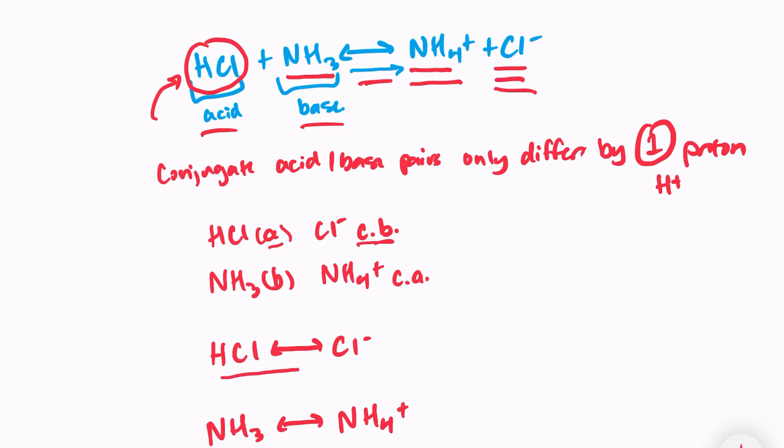So if we're only looking at the forward reaction, HCl loses a hydrogen, correct? That's why I call this the acid. HCl is the acid. It's giving away, it's donating a hydrogen. But if I look at the reverse reaction, going backwards, Cl- is actually gaining a hydrogen to become HCl. And that's why I say that this is the conjugate base, because it's acting as a base in the reverse reaction.